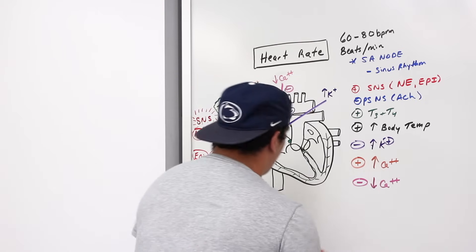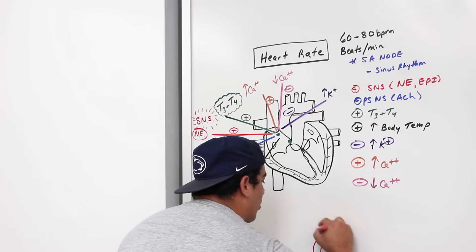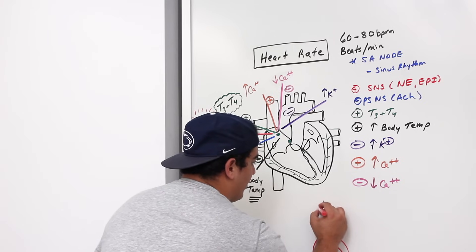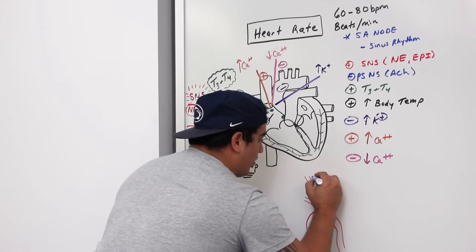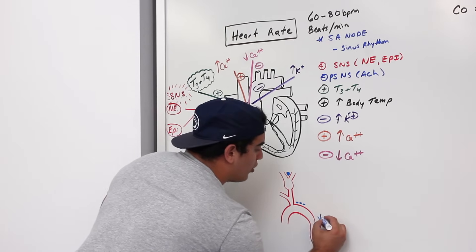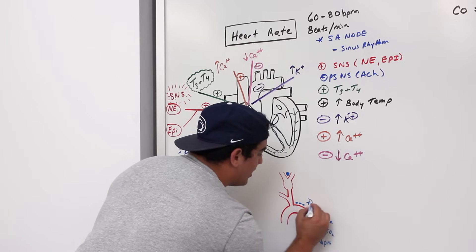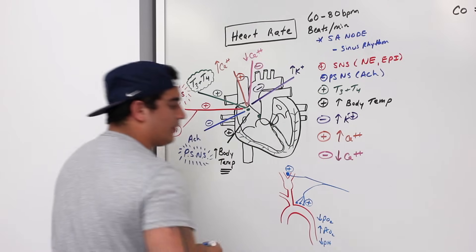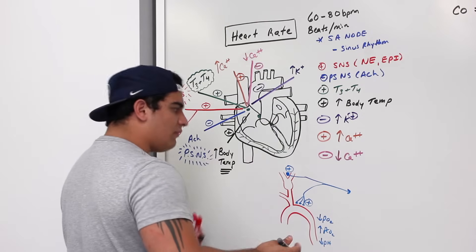Another regulator involves chemoreceptors. At the bifurcation of the common carotid artery into the internal and external carotid arteries, there are specialized peripheral chemoreceptors. Whenever the partial pressure of oxygen is very low, the partial pressure of CO2 is high, or the pH is very low, these chemoreceptors are stimulated. They carry this information to the central nervous system, where it's integrated in the medulla.